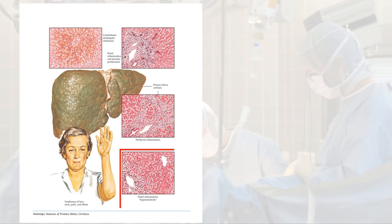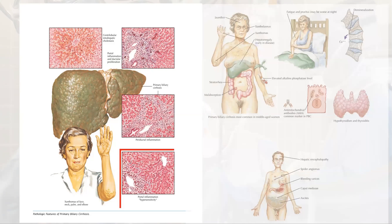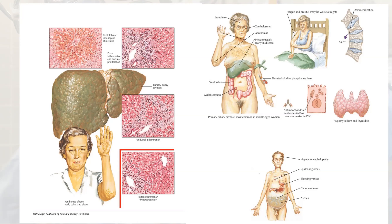In your scenario you will have a female, 40 to 60 years of age, with jaundice and other features: jaundice, xanthelasma, hepatomegaly, fatigue, itching worse at night. Almost all patients are positive for AMA — antimitochondrial antibody positive.